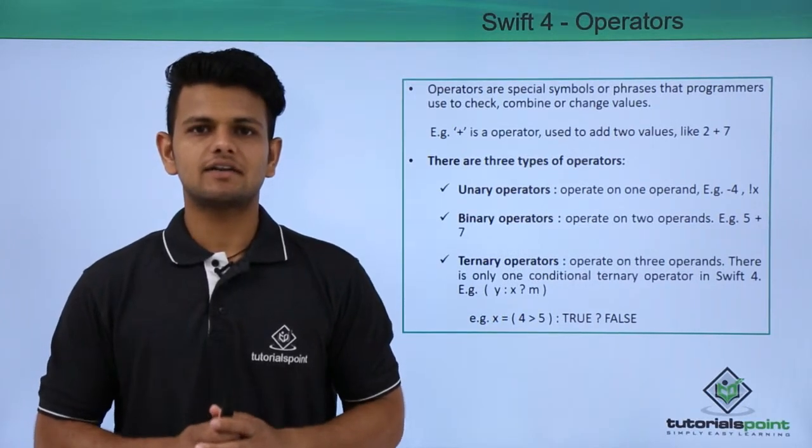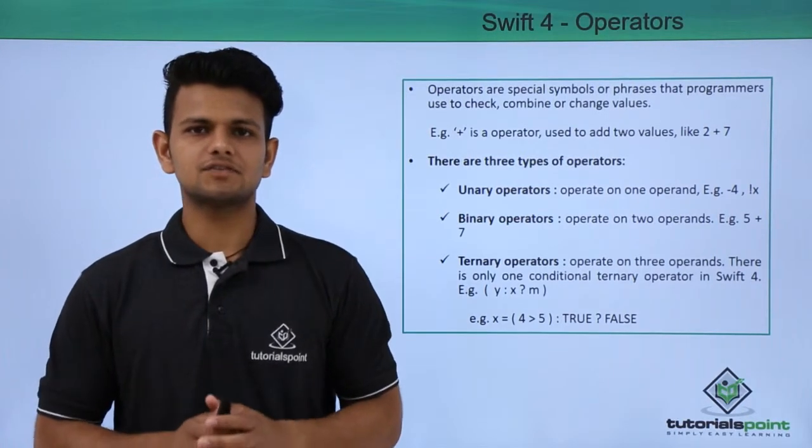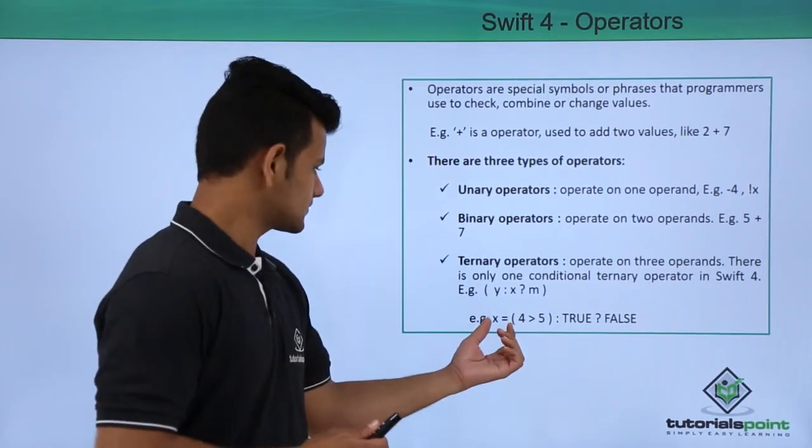Third one is a ternary operator. A ternary operator is applied on three operands. We will see this with the help of an example.